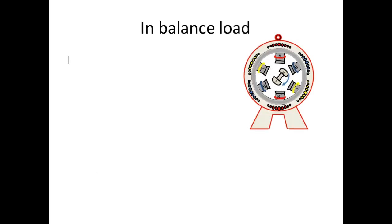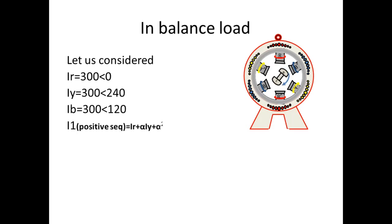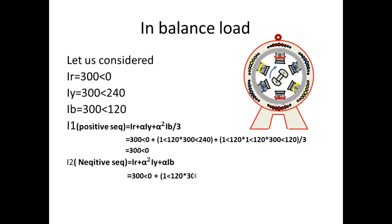In normal running condition the generator will not have any negative sequence current on it. Let us consider all three phase current has 300 amps and equal magnitude with phase angle. Then if we check the positive sequence current it will be always present in normal load condition. But the negative sequence current will not be there in balanced load condition.